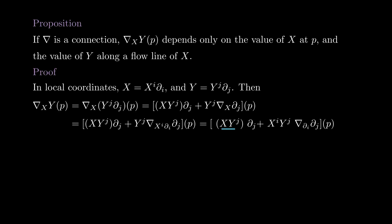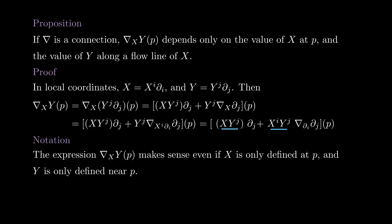In the first term, we have the derivatives of the components of Y in the direction of X — they only depend on X at P and the value of Y along a flowline of X. For the second term, we only have the components of X and Y evaluated at P, so this proves the proposition. Because of this, it makes sense to write Nabla at a point P, even if X is only defined at P and Y is only defined near P.